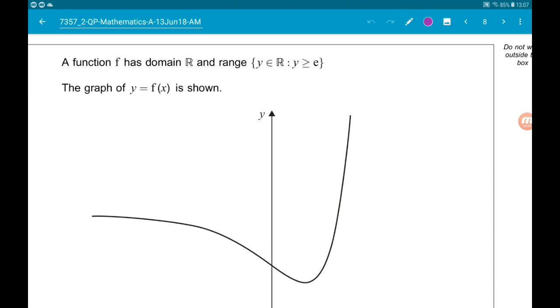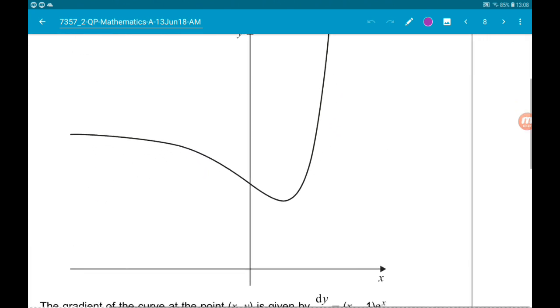So a function has a domain of R, so the values of x that we are allowed to put into the function are any real numbers, and the range of y is an element of the reals such that y is greater than or equal to e. So the range of values that the function can take are anything from e and above. We got the graph of y equals f of x is shown.